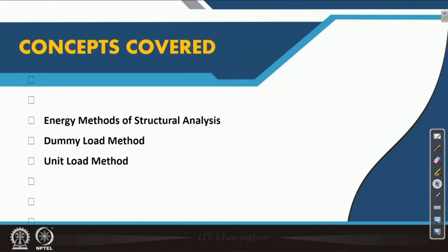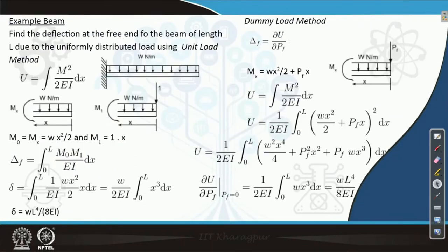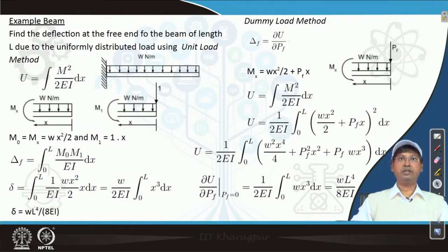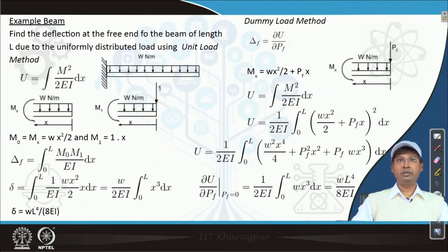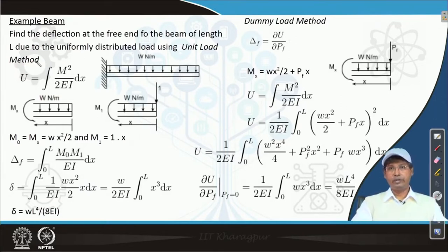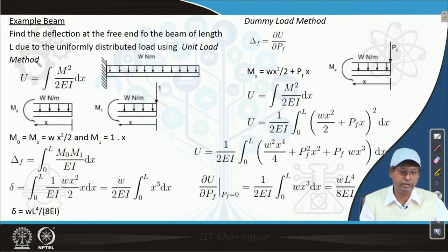Today, as already mentioned, we will solve a few example problems. The first example considers a cantilever beam loaded uniformly with a uniformly distributed load w (Newton per meter), as shown in the figure. We will be solving these problems both by unit load method and then by dummy load method. Since this is predominantly a bending problem, we need to consider the bending strain energy to find the deflection.